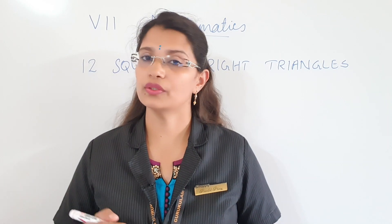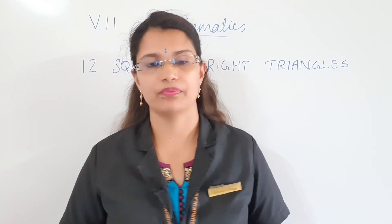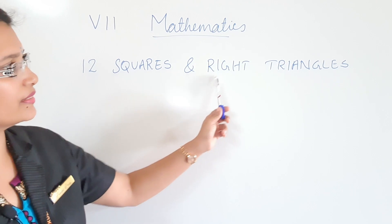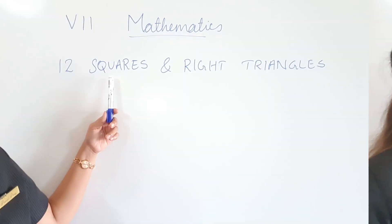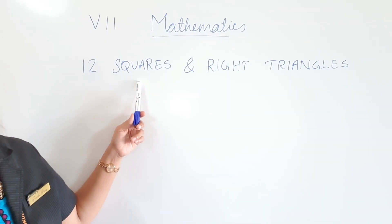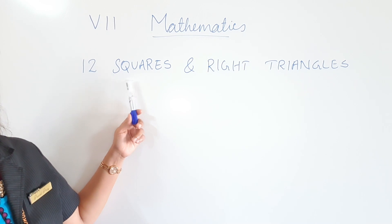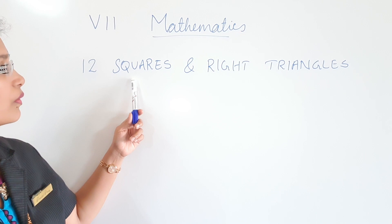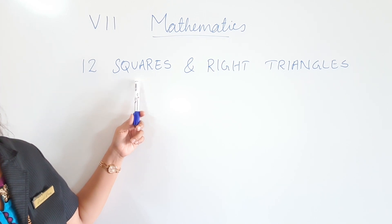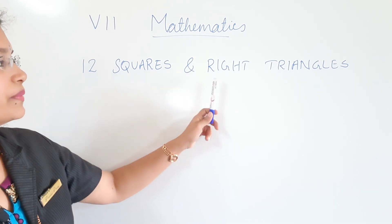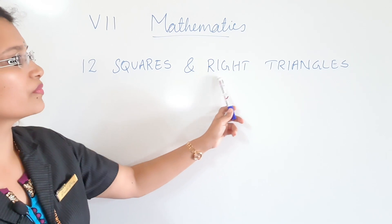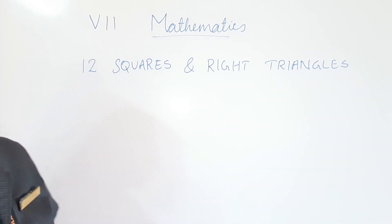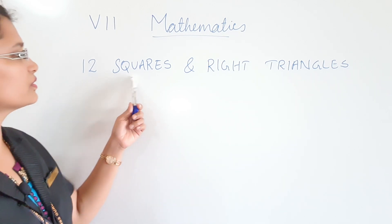Children, today we are going to learn a new chapter — chapter number 12, Squares and Right Triangles. Have you heard the word squares? In the 6th chapter, square and square root, we have already learned this, right? And in the 5th chapter, area of triangle, this right triangle also we have learned. What is a square, children?